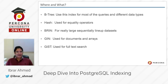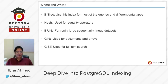BRIN index is for really large sequentially lined-up datasets. We discussed that BRIN is used when there is correlation with the physical storage of the table. So it is very good to use when you have a very large sequential dataset.